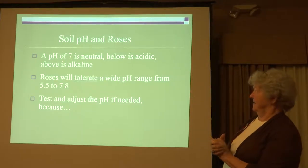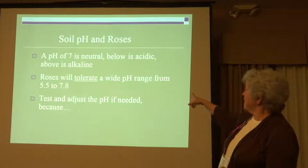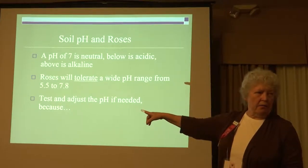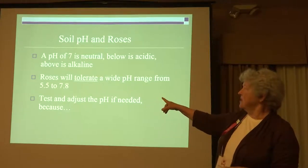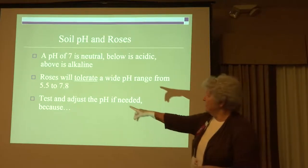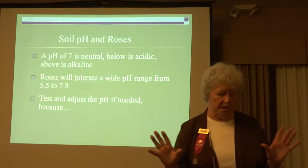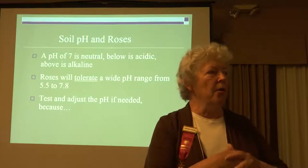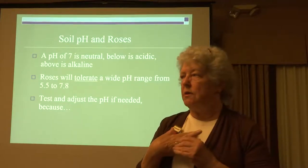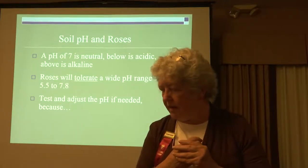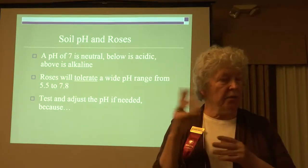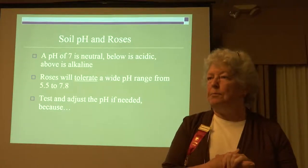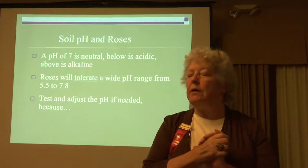Roses will put up with a pH range from about 5.5, which is really bad and really acidic, to 7.8. That 5.5 is not an imaginary number. I was involved with the University of California at Berkeley, and in those days I was also a volunteer at the Berkeley Rose Garden — just something to do at lunchtime.